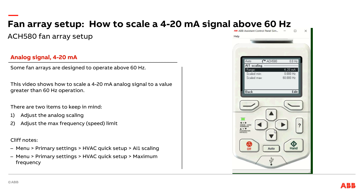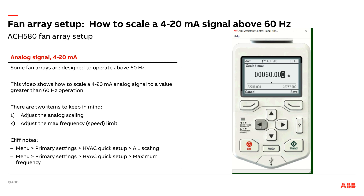The factor default is 0 to 60 hertz. Fan array application — I want to bump that up to 82 hertz. Hit save. And there you go. You might think I'm done — 4 to 20 milliamps equals 0 to 82 hertz. However, that is not the case. I'm only half done. I've taken care of all the scaling from the analog signal between the controller and the drive.